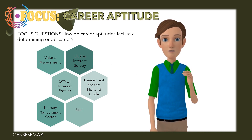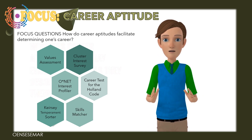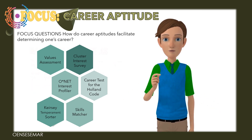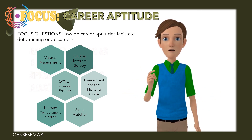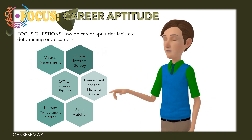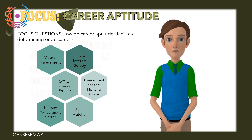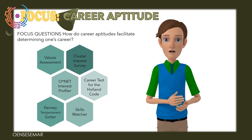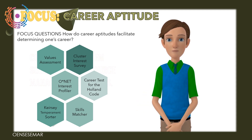Skills Matcher: With this career aptitude, users may evaluate the skills they desire to include in their jobs. Basic skills such as reading, writing, speaking, scientific reasoning, and critical thinking will be evaluated, as will more specific social, technical, analytical, computer, problem-solving, and resource management abilities.